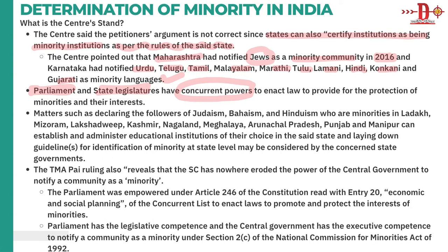The matter concerns declaring followers of Judaism, Bahai-ism, and Hinduism — who are minorities in Ladakh, Mizoram, Lakshadweep, Kashmir, Nagaland, Meghalaya, Arunachal Pradesh, Punjab and Manipur — to be able to establish and administer educational institutions of their choice. The TMA Pai ruling also reveals that the Supreme Court nowhere eroded the power of central government to notify a community as minority — it was never said that the centre cannot notify.